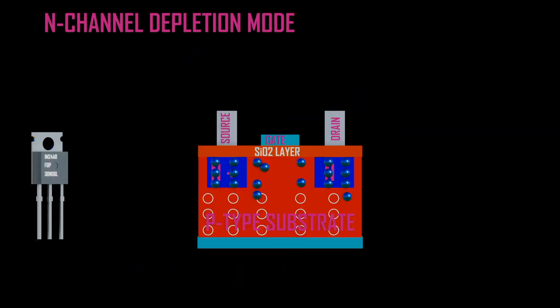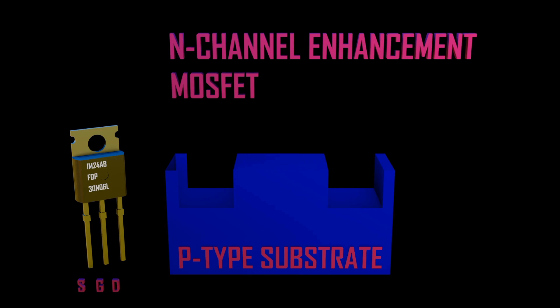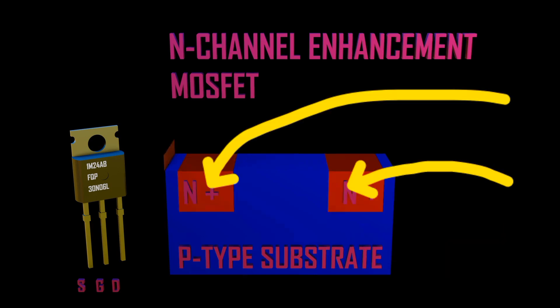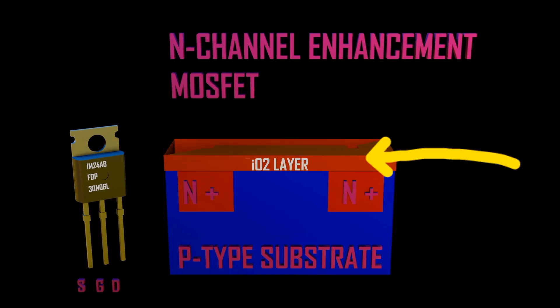MOSFET can either be N-channel or P-channel. Its construction consists of a substrate silicon layer which is lightly doped, upon which two heavily doped semiconductor materials are laid on top. Then an oxide material is laid on top, to which the terminals source, drain, and gate are attached.